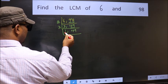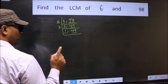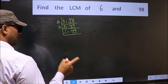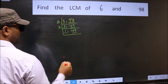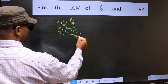We got 1 here, so focus on the other number 49. Always remember 7 into 7, 49, 7 into 7, 49. So here 49, so 7 into 7 is 49.